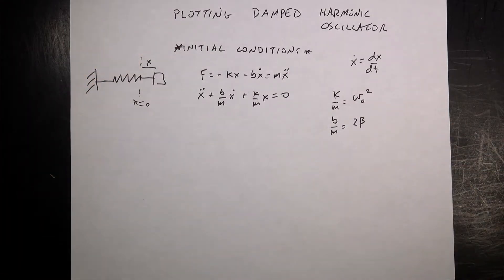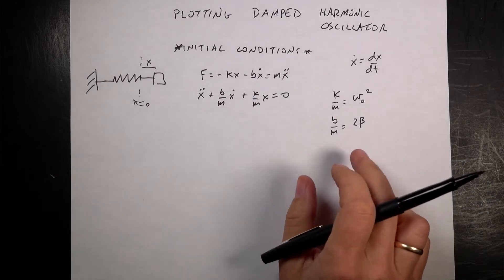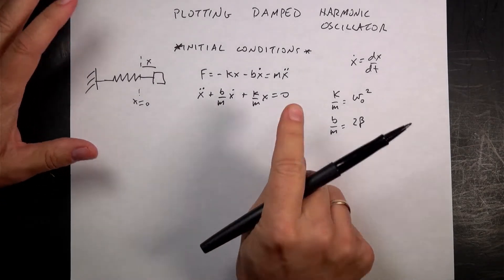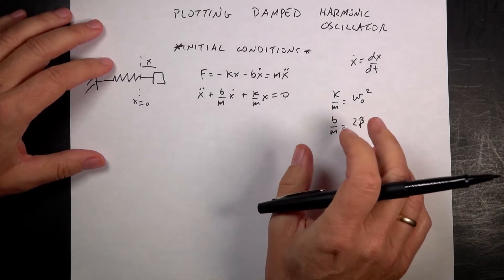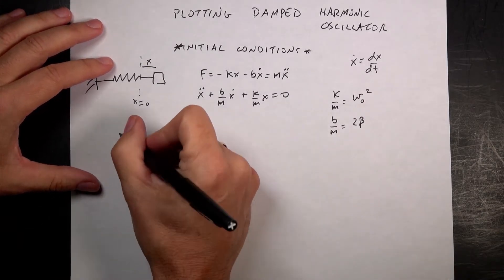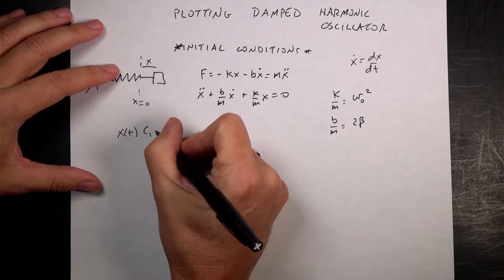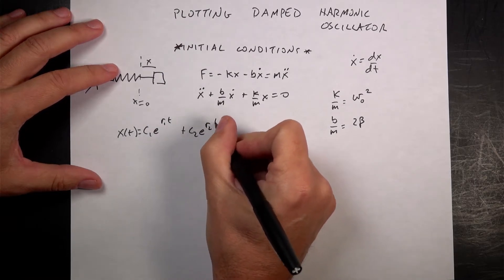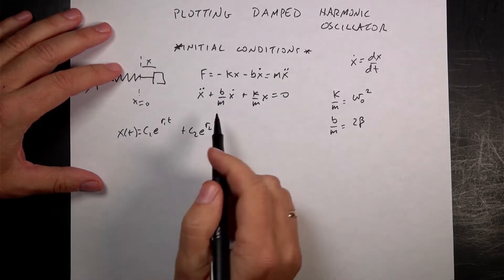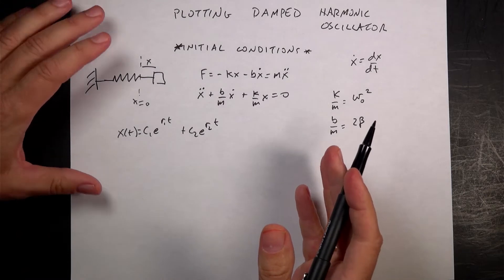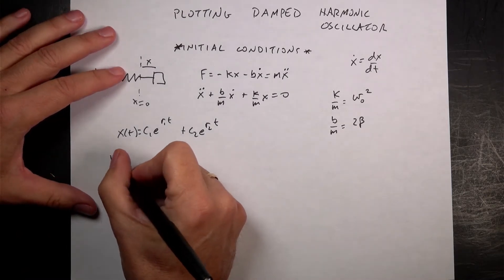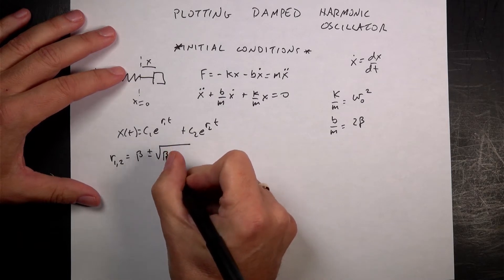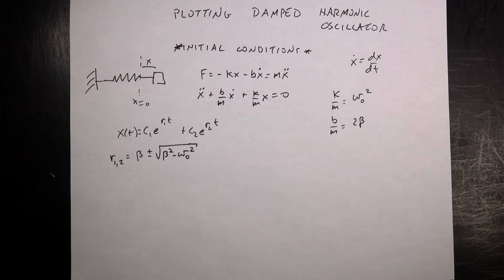You might ask why 2β — it just makes things simpler later on. From the characteristic equation, you get a solution of the form x(t) = c₁e^(r₁t) + c₂e^(r₂t), where r₁ and r₂ are solutions to the resulting quadratic: r₁,₂ = −β ± √(β² − ω₀²). The β term depends on drag parameters, and ω₀ depends on the spring parameters.